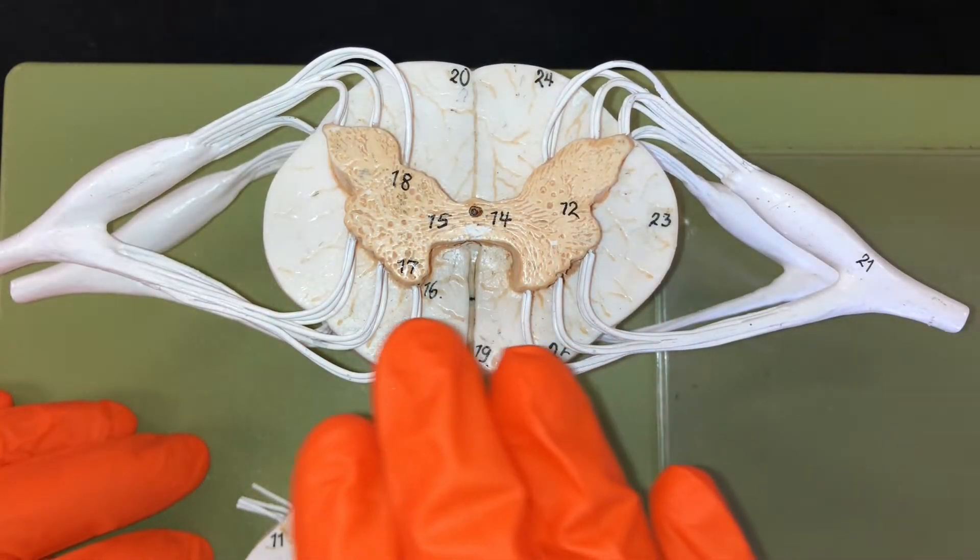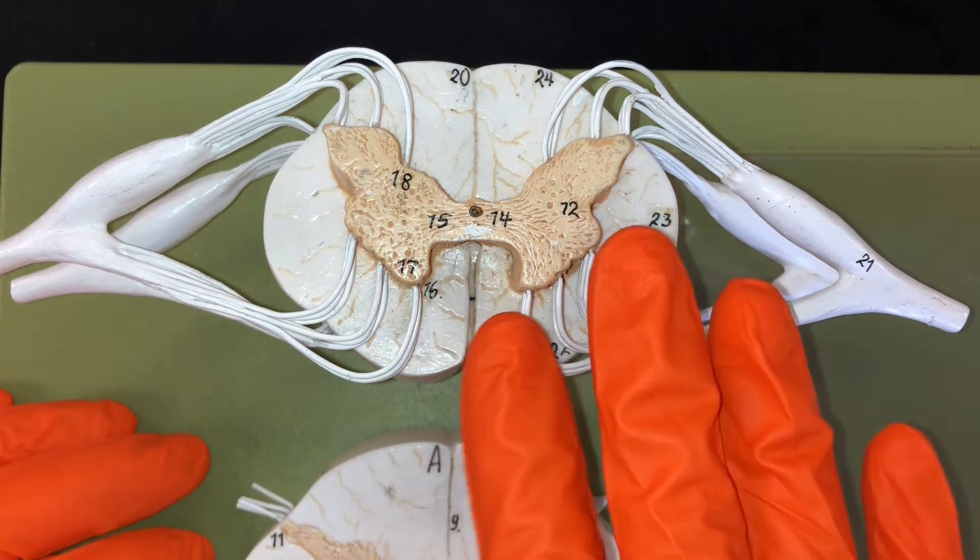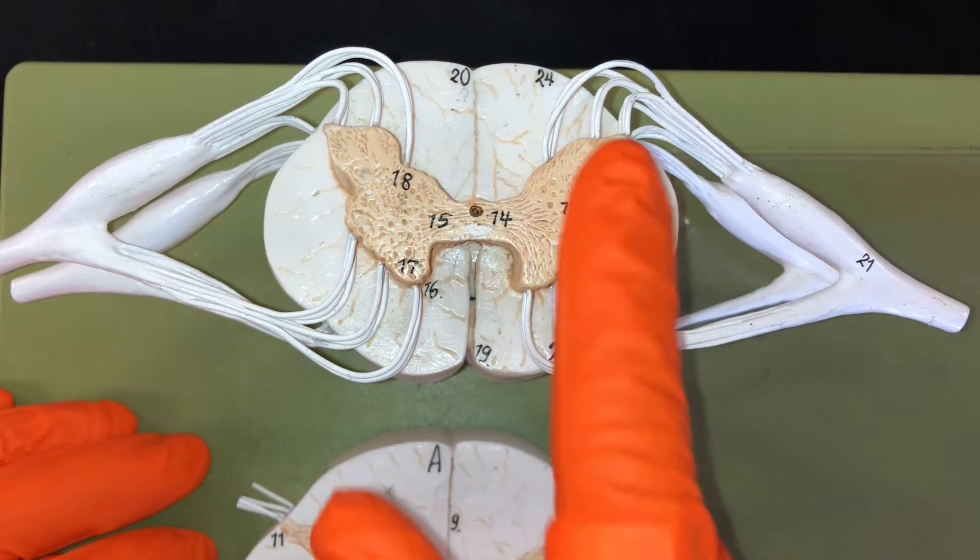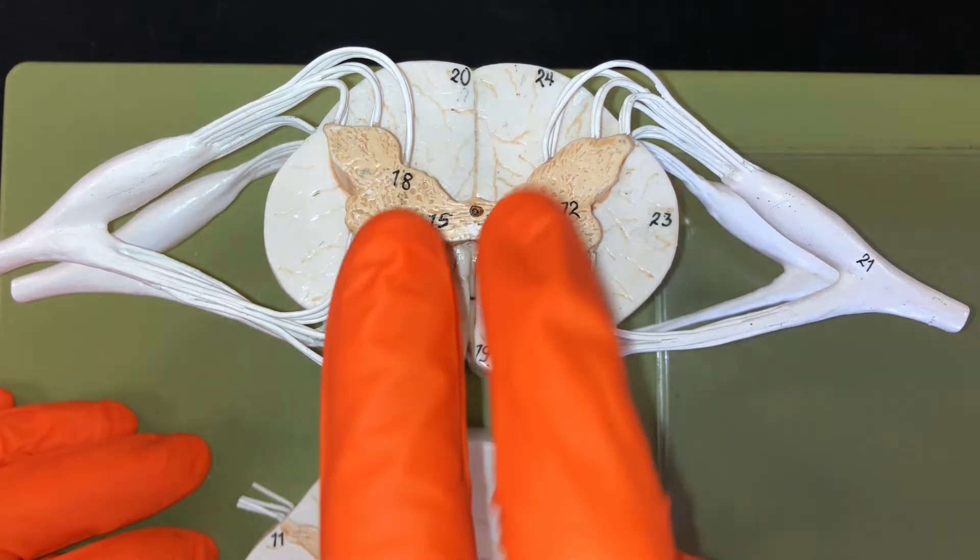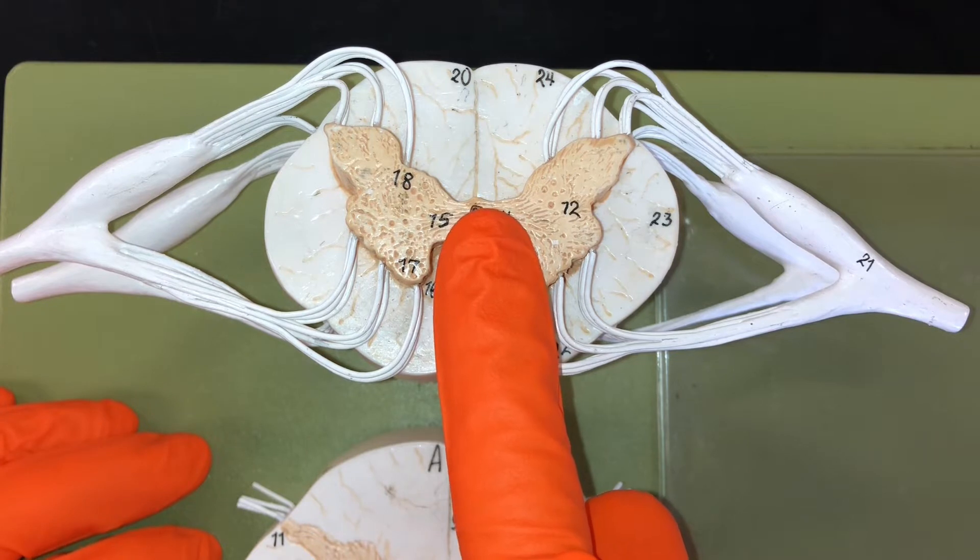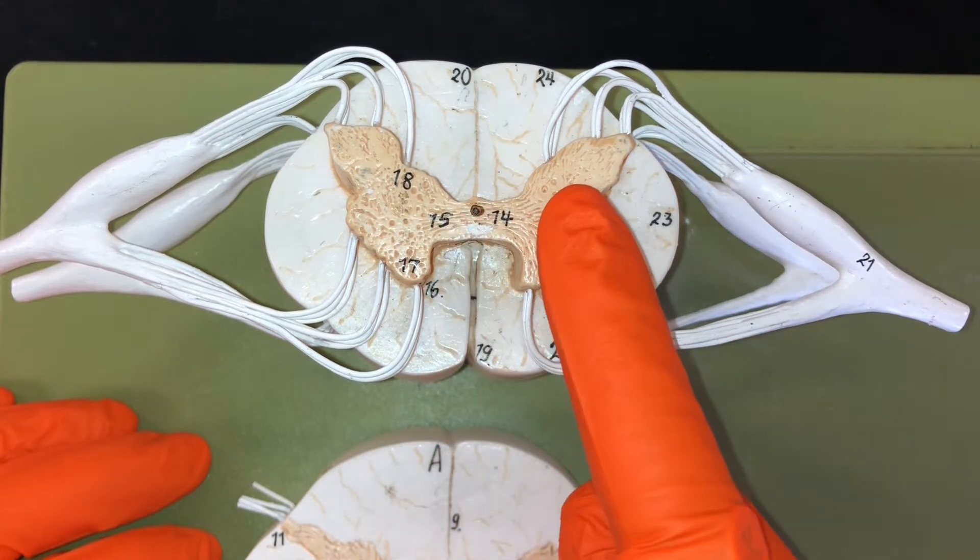Let's start off by looking at this cross-section of the spinal cord. Here you'll notice that we have white matter and gray matter. The gray matter, which is in the middle, kind of looks like this butterfly or H letter, and the color comes from cell bodies and dendrites.